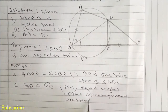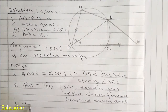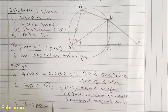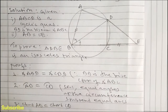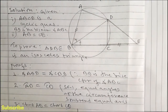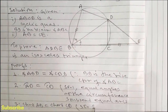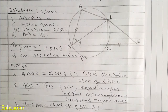In statement number 3, we can write chord AD is equal to chord CD, simply AD is equal to CD. This is from statement number 2, because equal arcs give equal chords.